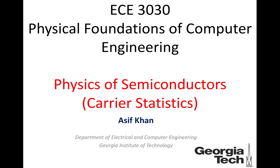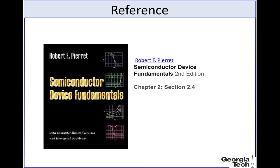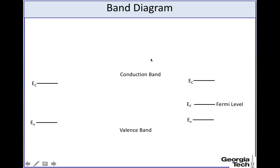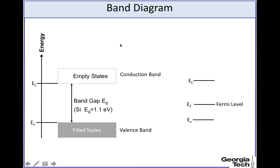Hello and welcome everyone to Lecture 5 of EC 3030. Today we will be talking about carrier statistics. One of the most important concepts we will introduce today is the concept of Fermi level — basically the probability of finding an electron at a given energy provided there is an available state. We will use this to find equations for carrier densities in intrinsic and extrinsic semiconductors. This is covered in section 2.4 of the textbook.